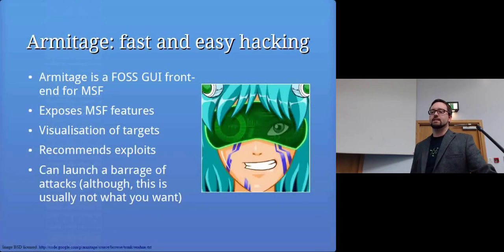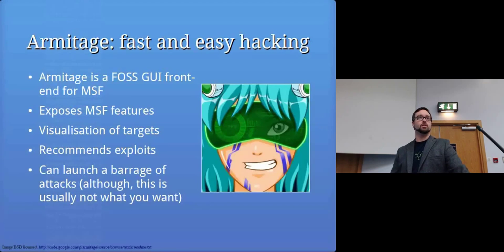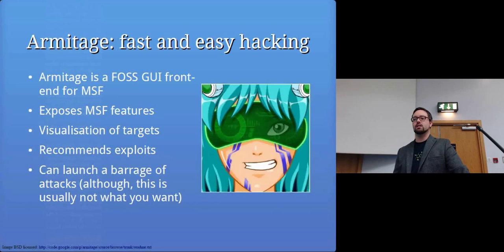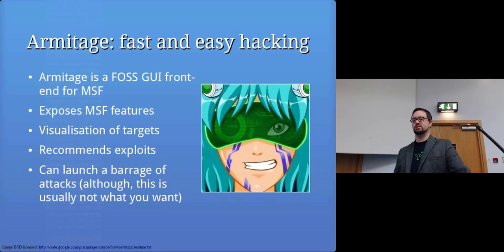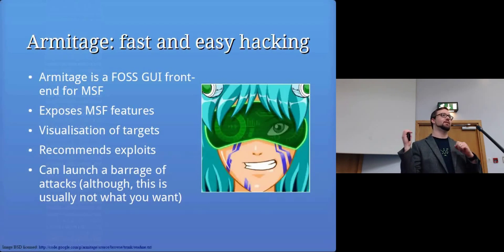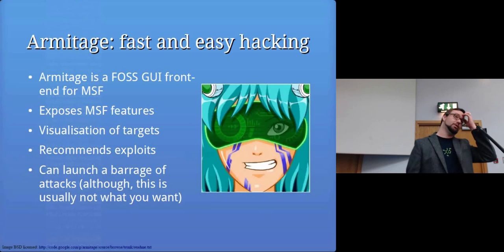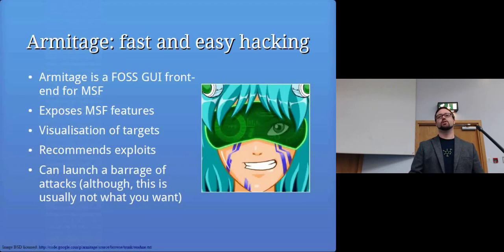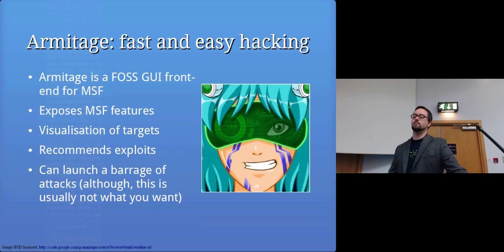Armitage is a third-party front end for Metasploit that provides a graphical interface to the Metasploit framework. It exposes Metasploit's features in a visual way and will recommend exploits you might want to use. It also has a 'Hail Mary' feature where it just launches hundreds of exploits and tries loads of stuff to break into a computer — it's usually not what you want because your log files light up like a Christmas tree. If you're an actual attacker it's probably not ideal, but it might be helpful in the labs to try a few different things.